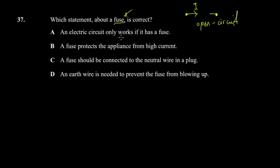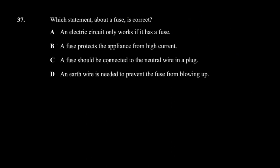Assessing the answers: 'An electric circuit only works if it has a fuse' — false, appliances can operate without one. 'A fuse protects the appliance from high current' — true. 'A fuse should be connected to the neutral wire' — false, it's connected to the live wire. 'An earth wire prevents the fuse from blowing' — false.